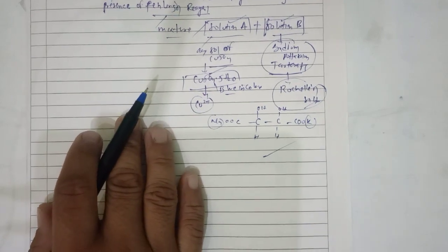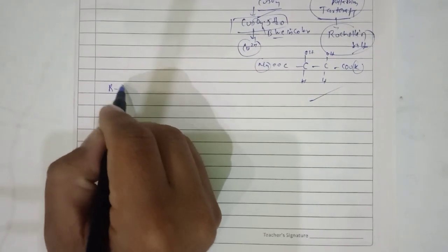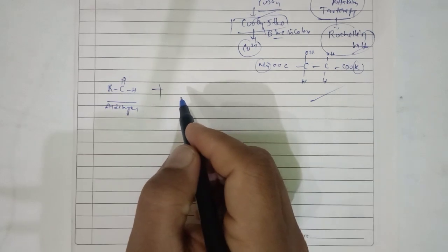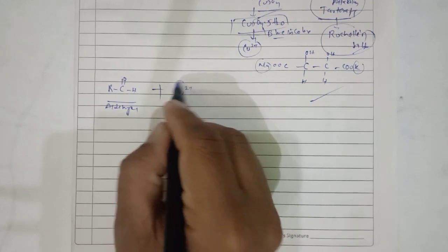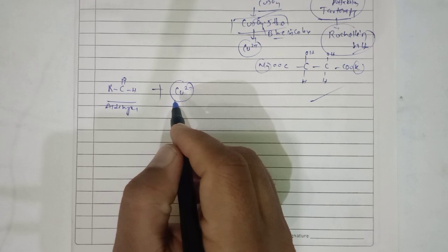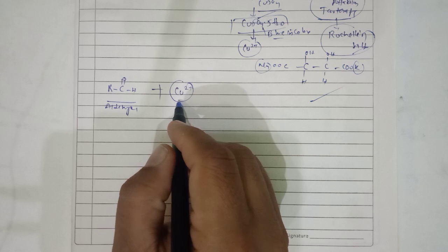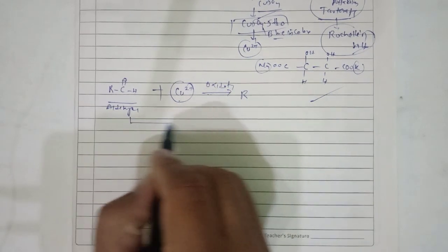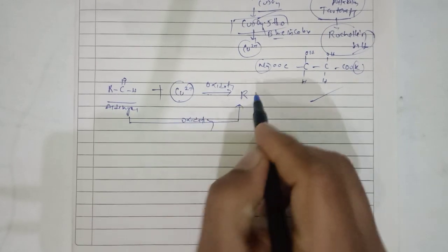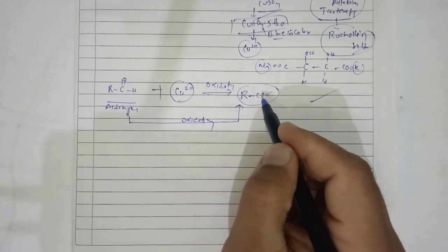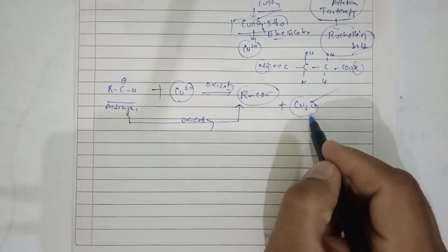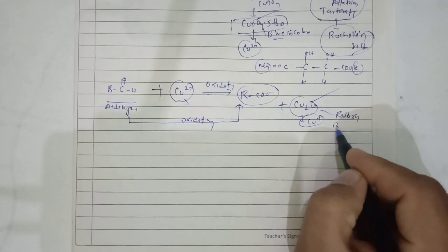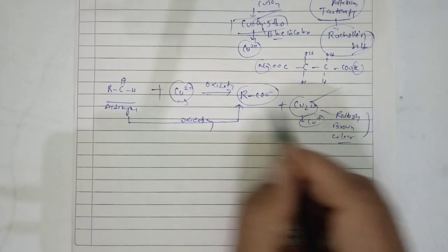Now let us understand the reaction. We take an aldehyde, represented as R-CHO. In the presence of Fehling's reagent, which provides Cu²⁺ ions in aqueous solution, oxidation takes place. The aldehyde undergoes oxidation and forms RCOO⁻, the carboxylate compound. Simultaneously, Cu²⁺ is reduced to Cu₂O — a reddish brown colored compound — so reduction of copper also takes place.